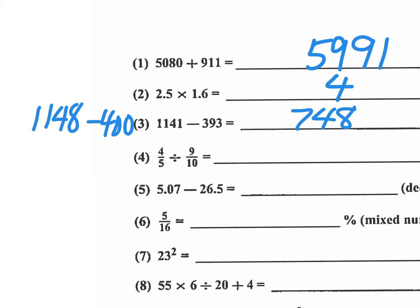Number four, 4 fifths divided by 9 tenths. So on this one, what you're going to have to do is mentally, you're going to flip the 9 tenths because you're dividing by a fraction. So you're going to multiply by 10 over 9. When I see the 10, I'm going to cancel that with the 5. I have 2. So 2 times 4 is 8. So that's 8 over 9. The answer is 8 ninths for number four.